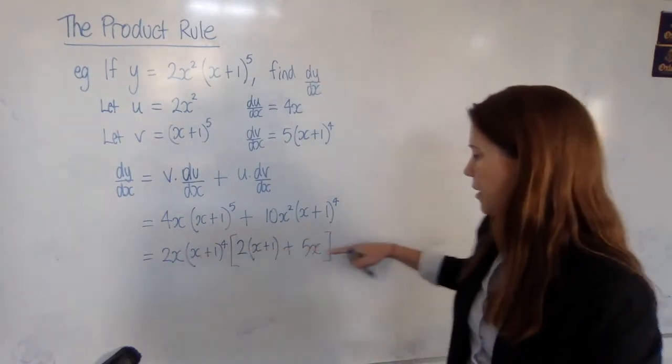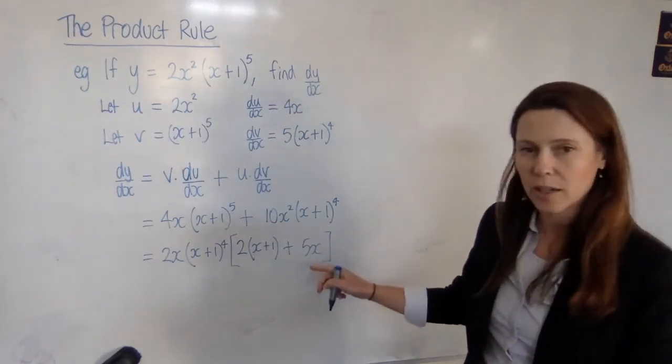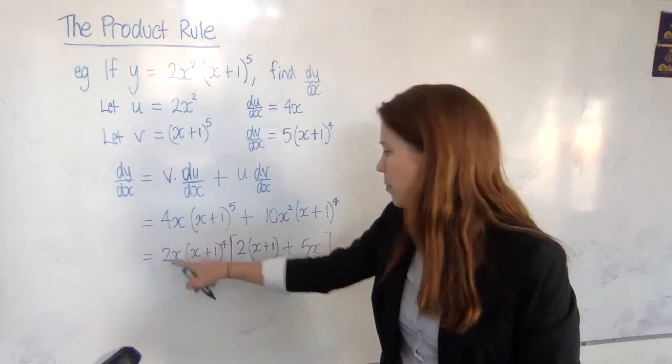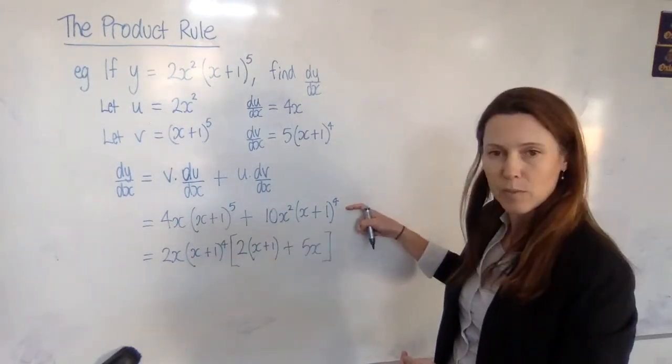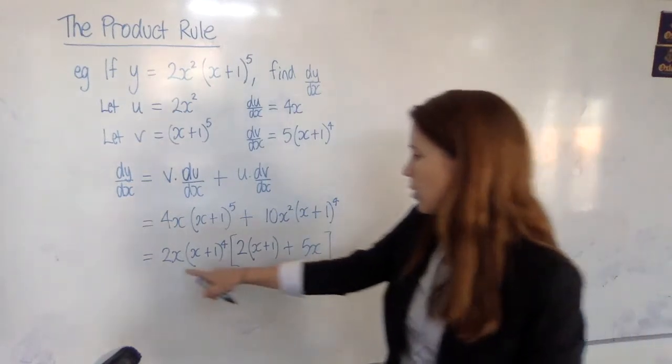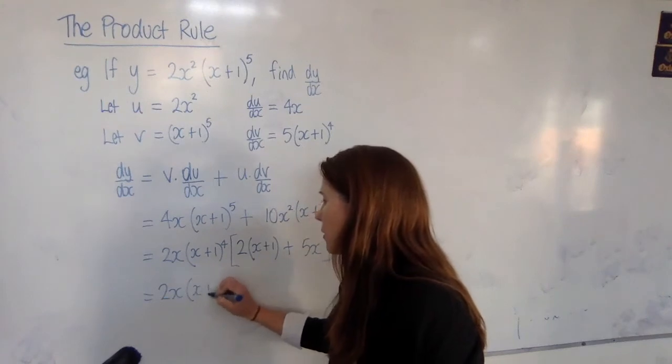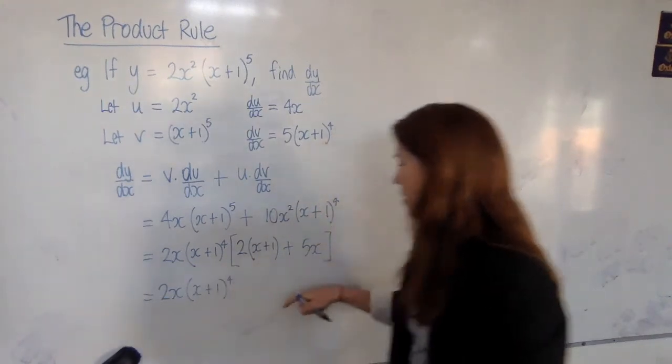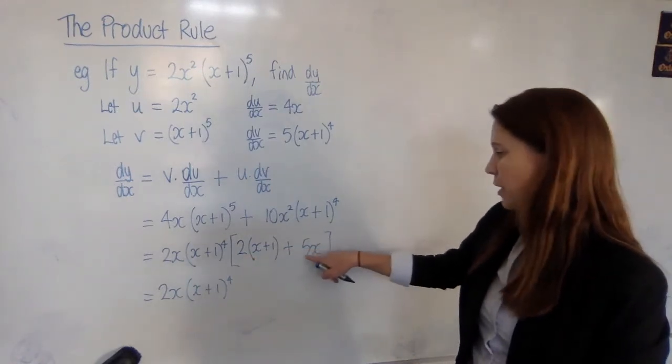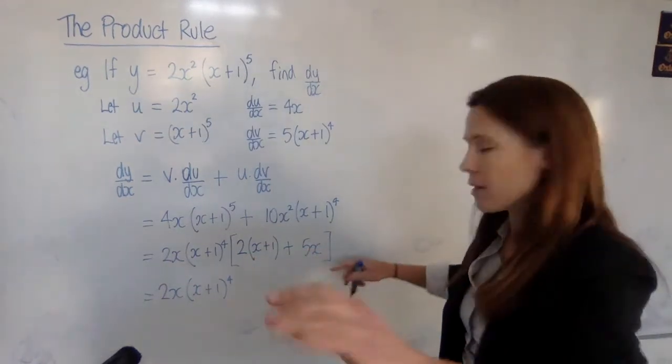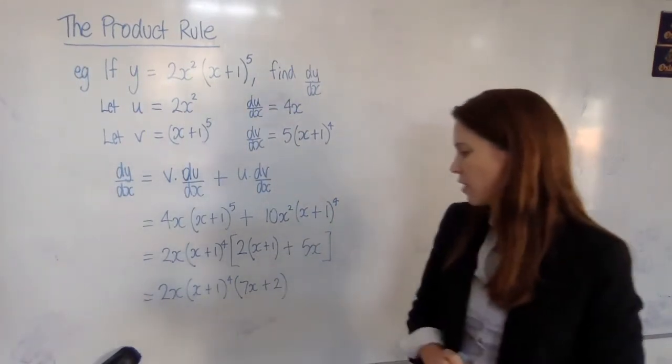So this part here where we need to factorise is probably the hardest step in the product rule. So it pays to just double check it. Mentally expand your big brackets out again just to double check that you get the same thing as what's in this line. Now we can tidy up. We've got this part we can just rewrite. But this part, I'm thinking this is 2x+2, but the 2x+2 plus 5x will give me 7x+2. And we're finished.